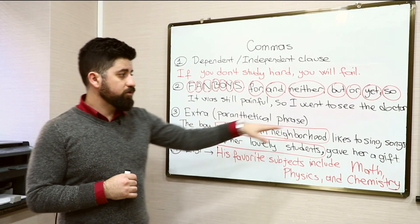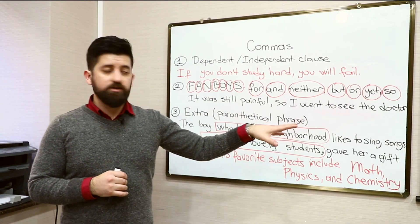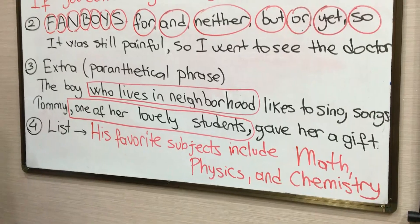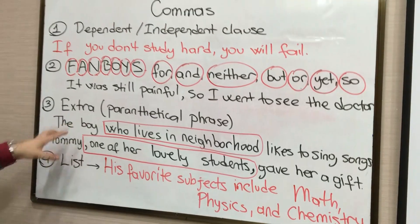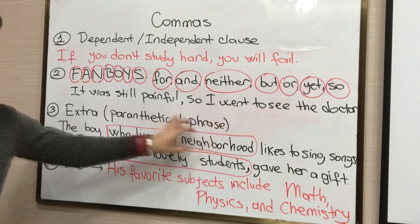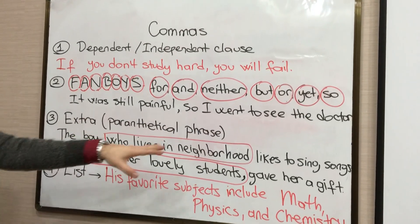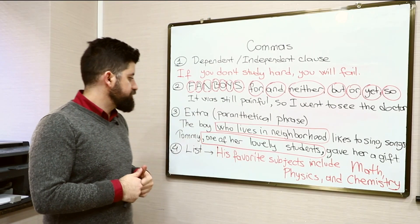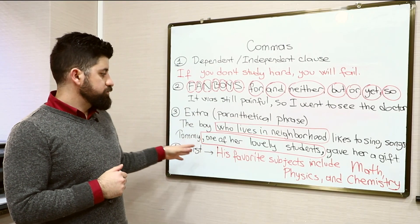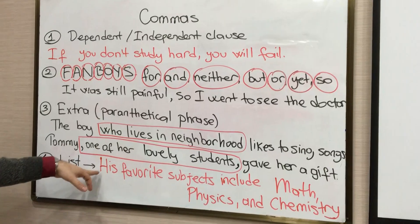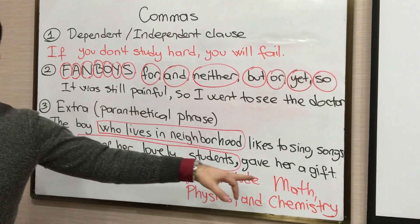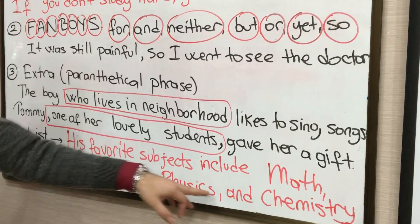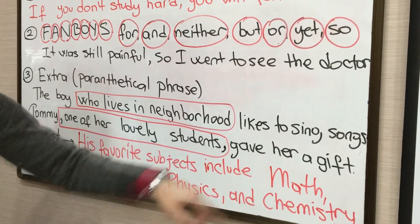But in the first sentence, 'The boy likes to sing songs' — the phrase 'who lives in the neighborhood' clarifies and identifies that boy. That's why it is an essential part of the sentence and you don't need to put commas. The last category is lists — in order to separate items, we use commas. For example: 'His favorite subjects include math, physics, and chemistry.' We separate the items by using commas.